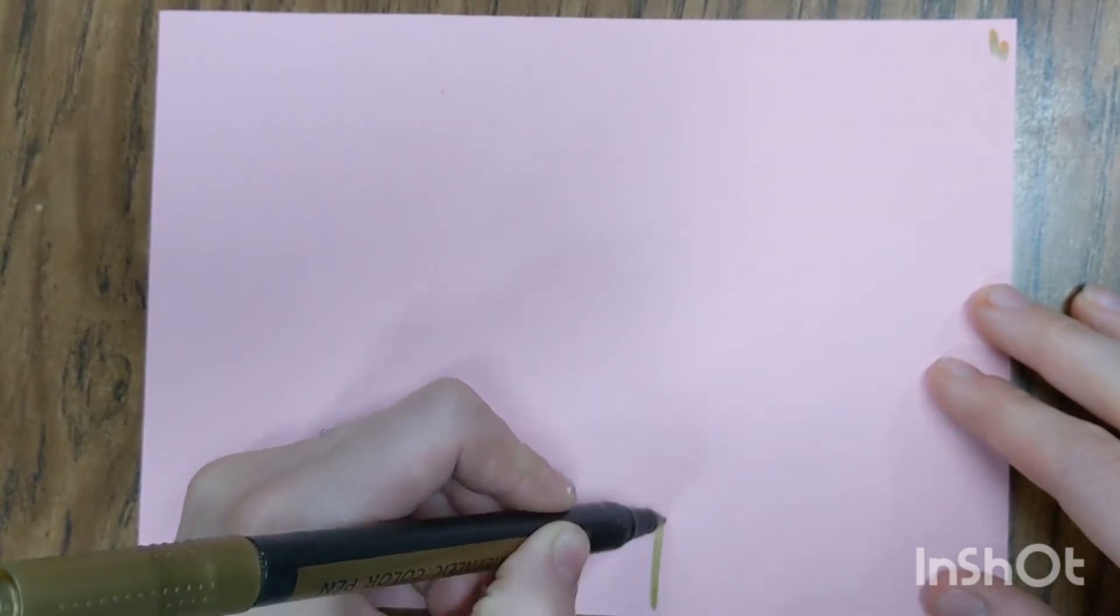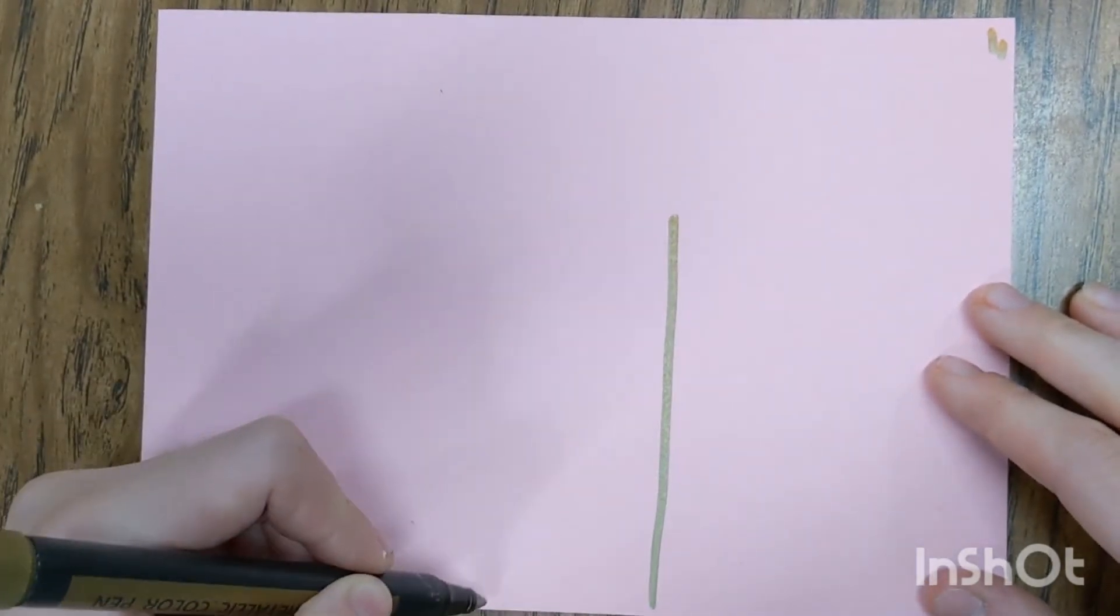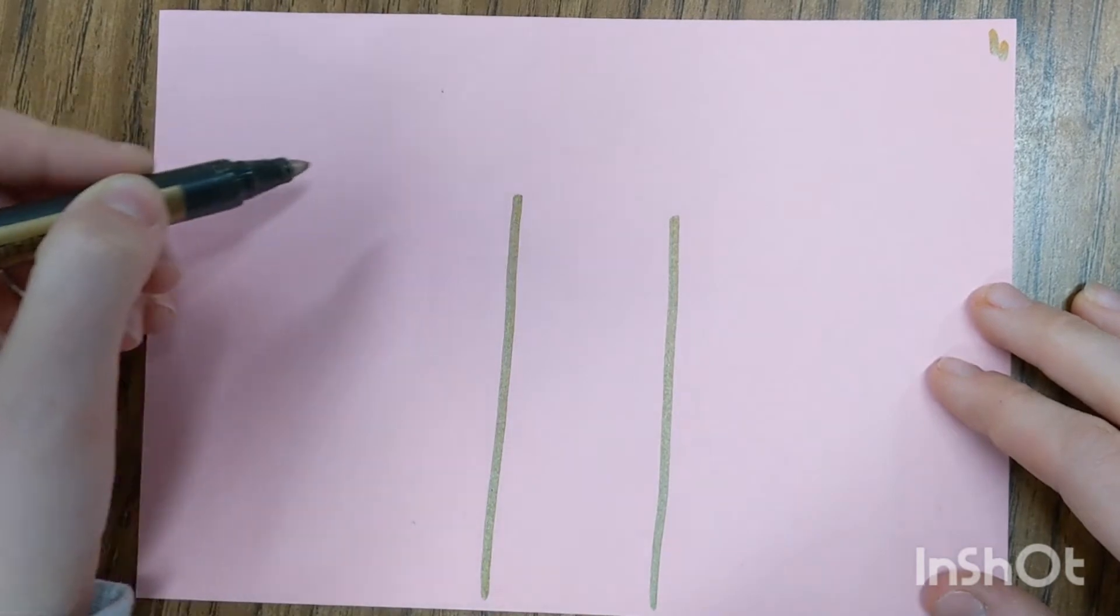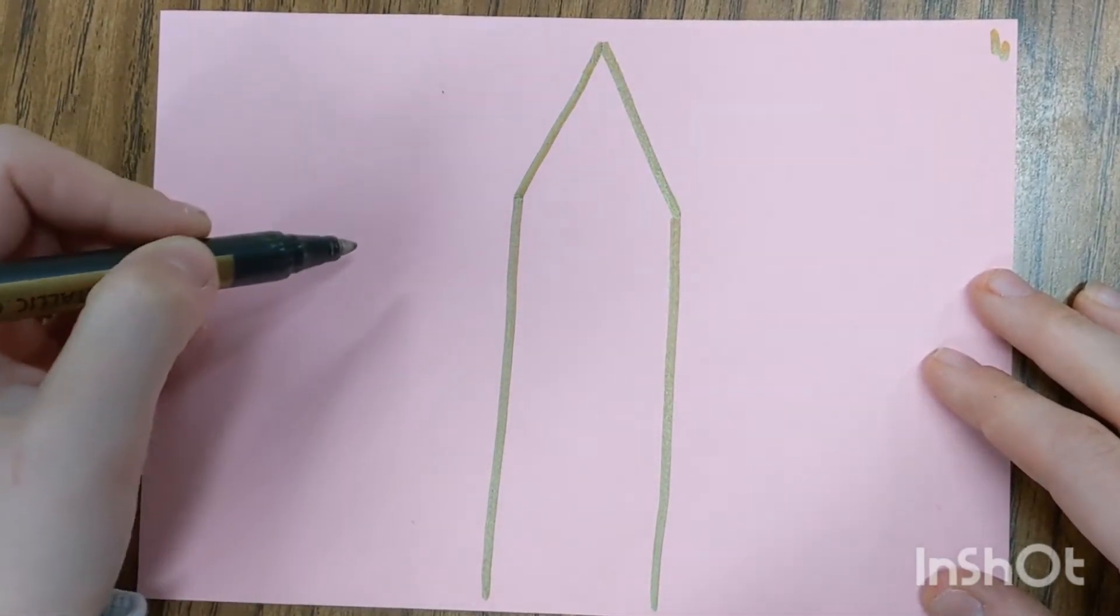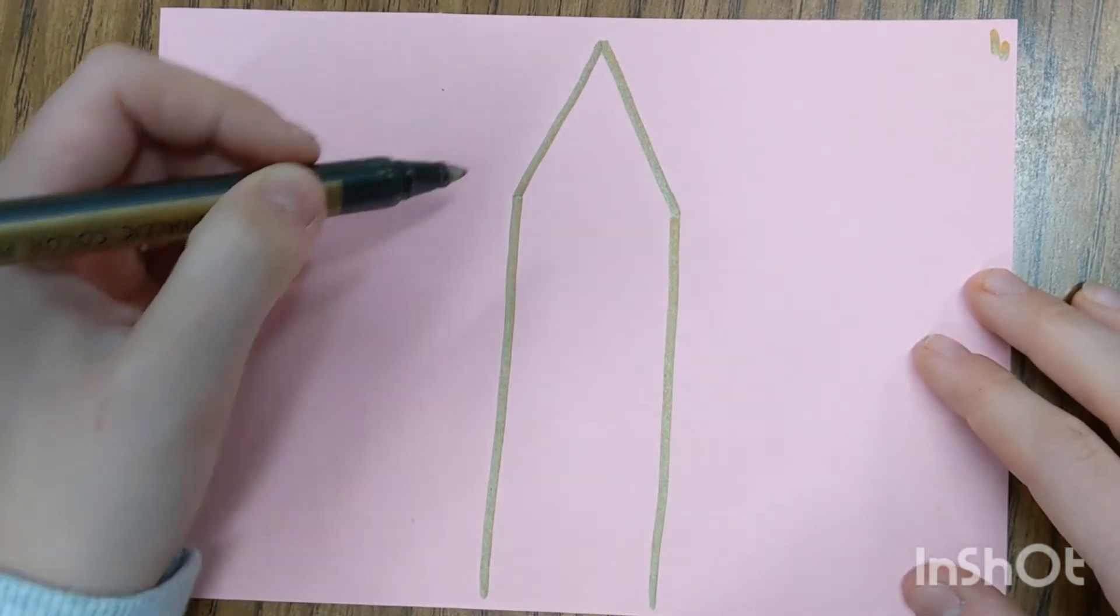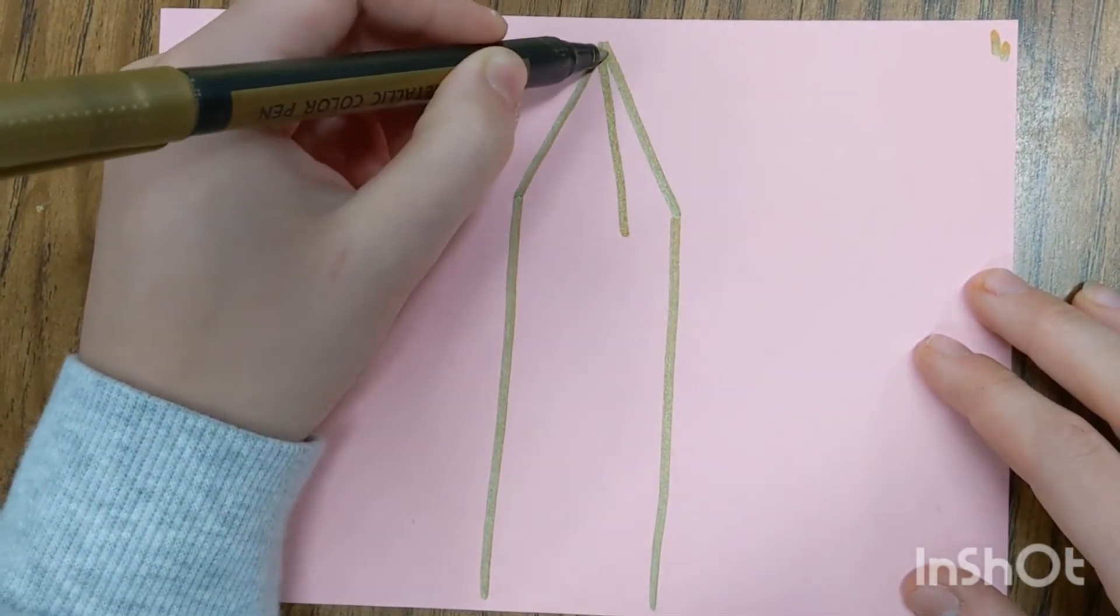The first thing that we will do is draw a big crystal in the middle and front of our paper. Draw two vertical lines going up from the bottom of your paper. Then add a triangle shape on the top. It'll sort of resemble a pencil.